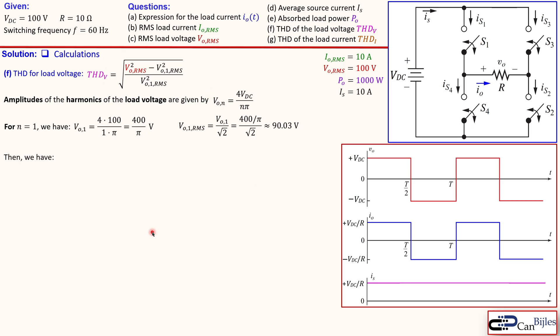Okay now we substitute that in here we have now everything we get now this expression which gives you 0.483 or 48.3 percent as your THD for your load voltage.